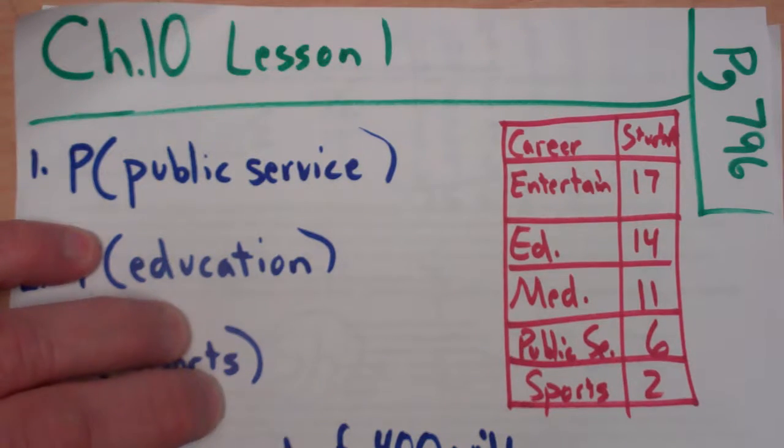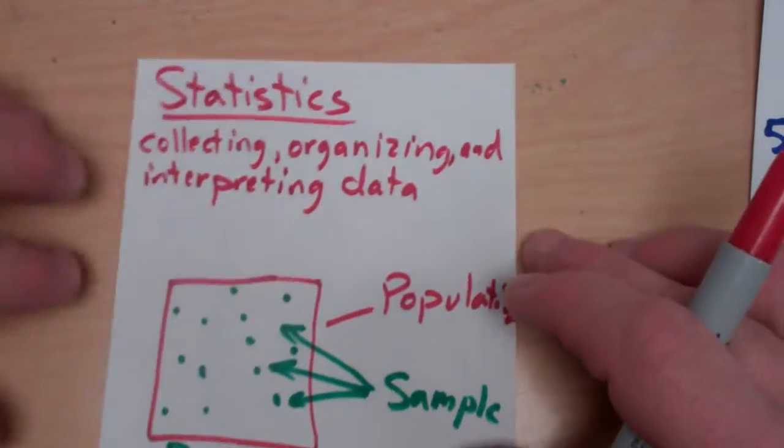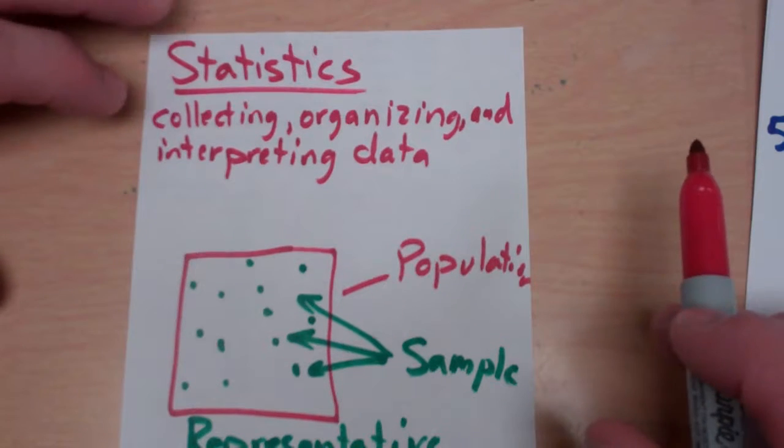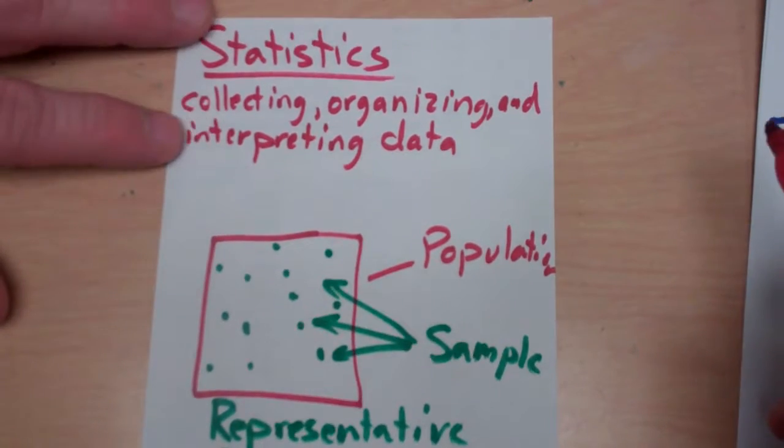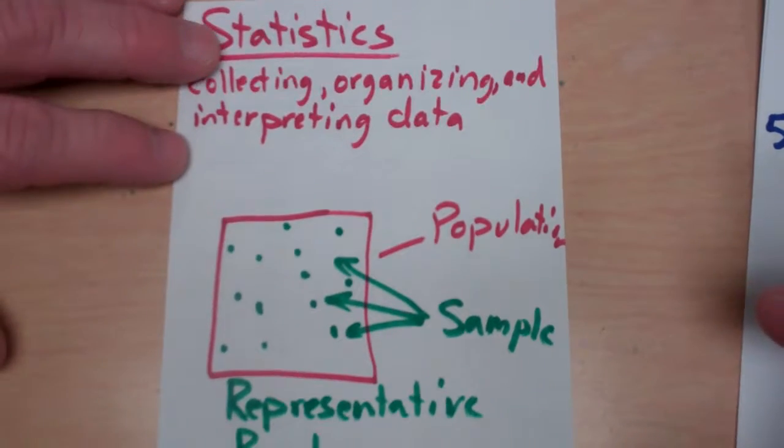All right, this is Chapter 10, Lesson 1, dealing with statistics. So let me give you just a brief overview of what statistics are. Statistics is a branch of math that involves collecting, organizing, and interpreting data. So we're turning things into numbers and then using those numbers to hopefully predict and interpret what's going on.